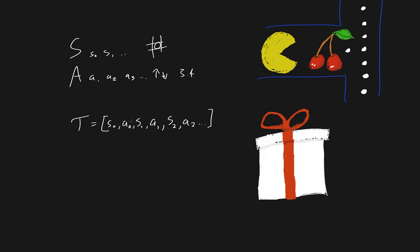Not too hard — trajectories. You'll also very commonly hear the term 'rollouts,' and probably most commonly, 'episode.' I think episode is what's most commonly used, at least what I use most frequently. You'll hear all of these terms used interchangeably and they all roughly mean the same thing.